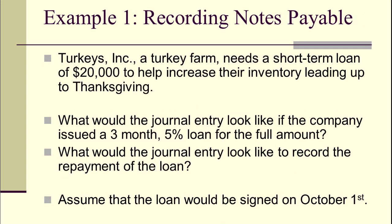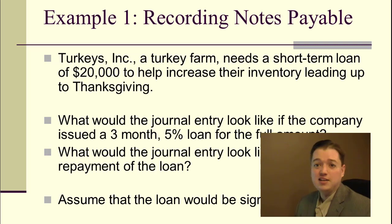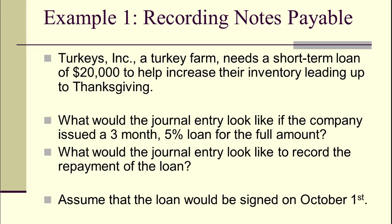So this is Turkeys Incorporated. It's a turkey farm. I know, kind of a weird example but usually when I cover this in the fall, it's Thanksgiving time. And what can I say? It was my first year teaching and I needed a company name and it just made sense. So we're going to stick with Turkeys Incorporated. It needs a short term loan, $20,000 to help them get their inventory up to where it needs to be for Thanksgiving. So we want to look at what the journal entry will be if they issue a 3 month 5% loan for that full $20,000. And then we also want to do the journal entry to record the repayment of the loan at the end of the 3 months.